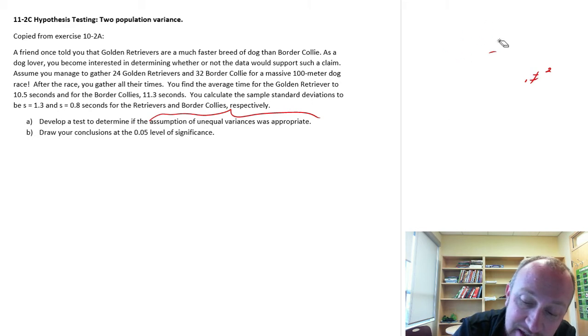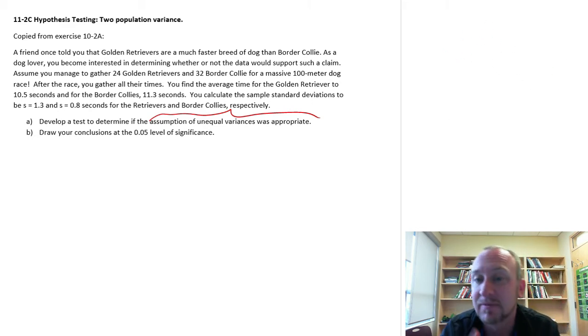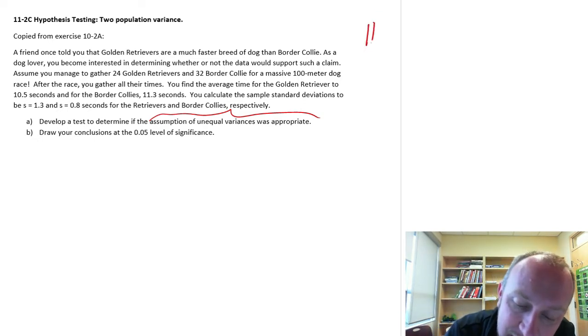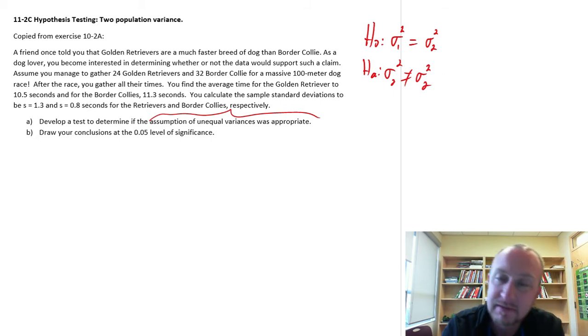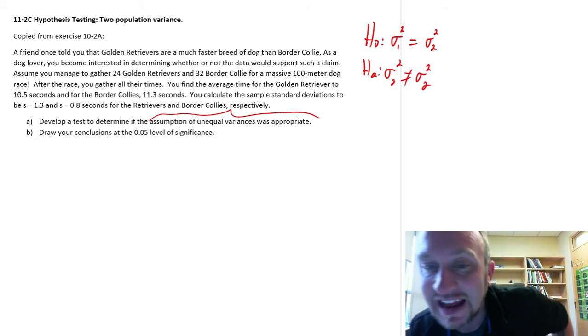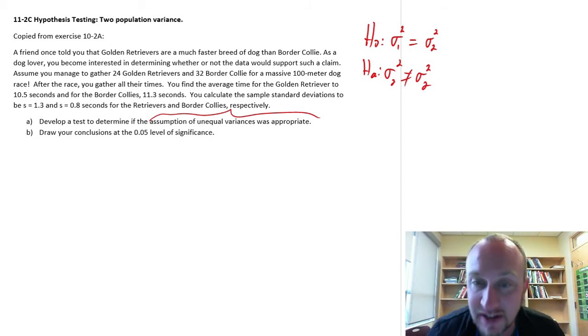Let's go through and we'll set this up as a hypothesis test. This is a two-tailed test, because that assumption of unequal variance, is it not equal or is it equal? It's clearly a two-tailed test. So here we'll have sigma1 equal to sigma2, and it's not equal. So if we reject this null hypothesis, then that means the assumption of unequal variances was appropriate.